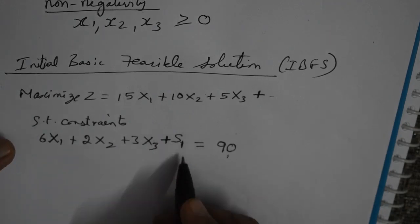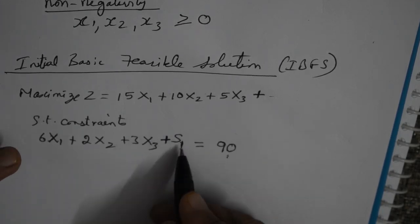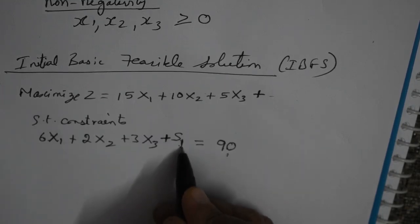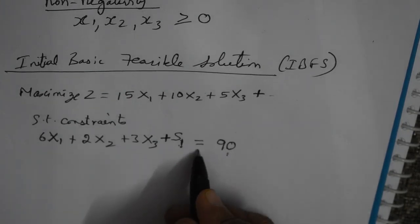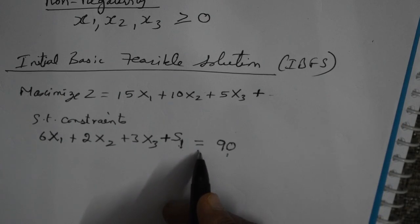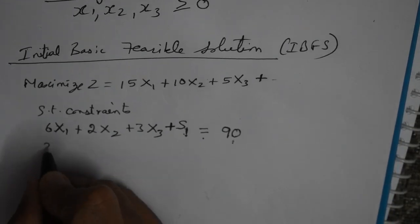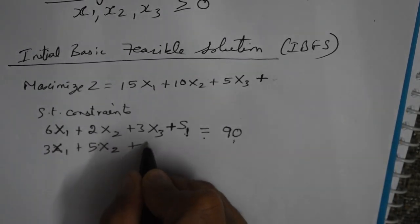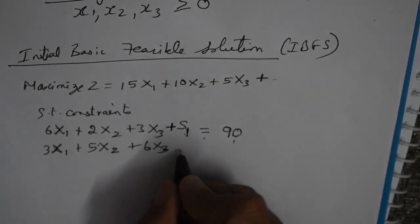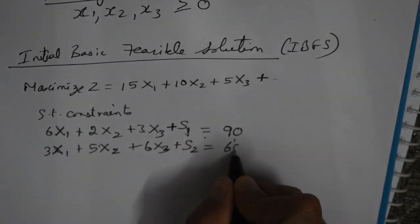For example, if x1, x2, x3 sum to 80, then S1 is 10; if the sum is 85, S1 is 5; if the sum is 90, S1 is 0. The left-hand side and right-hand side are always equal. Similarly, repeat the process for the second constraint: 3x1 plus 5x2 plus 6x3 plus S2 equals 60.